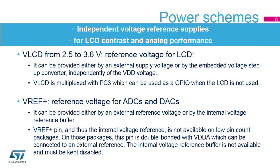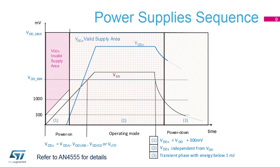As a general requirement, the VDD power supply has to be provided first and released last. During the power-on phase, the following power sequence requirements must be respected: when VDD is below 1 volt, other power supplies — VDD-A, VDD-IO2, VDD-USB, and VLCD — must remain below VDD plus 300 millivolts. When VDD is above 1 volt, all power supplies become independent. During the power-down phase, VDD has to be switched off at the same time or after other power supplies. Refer to application note AN4555 for more details on power supply sequencing.